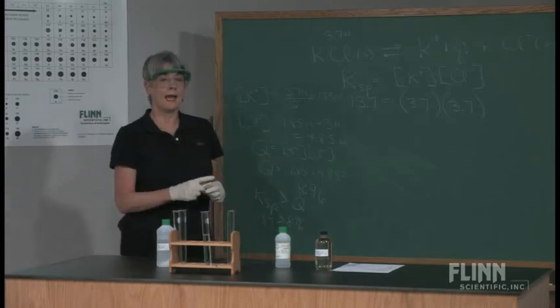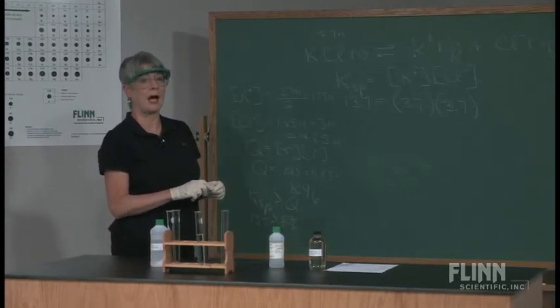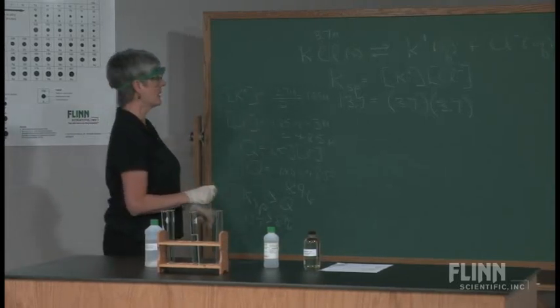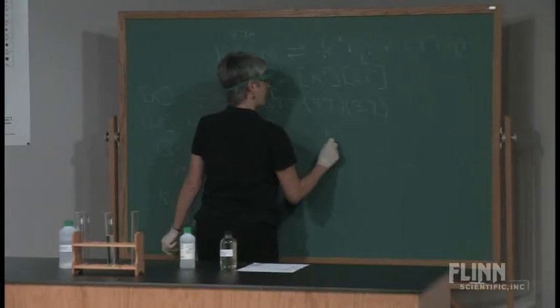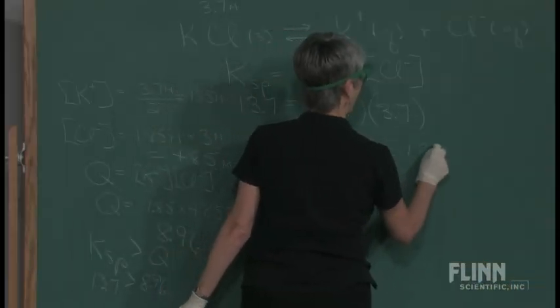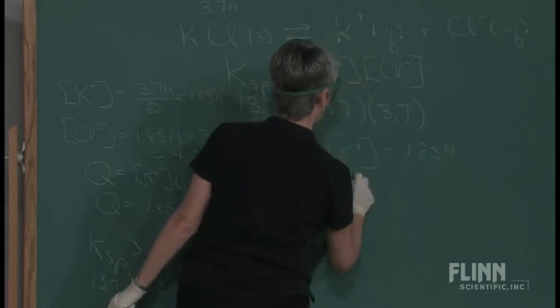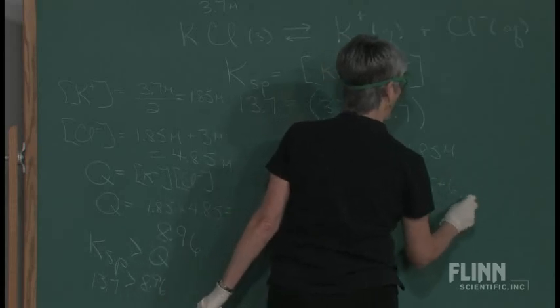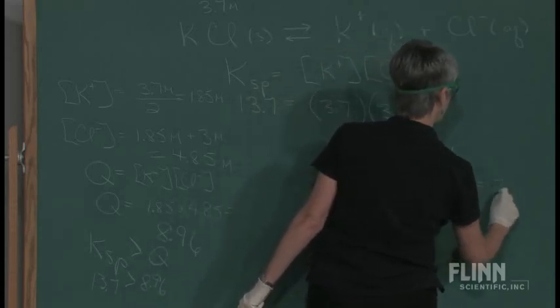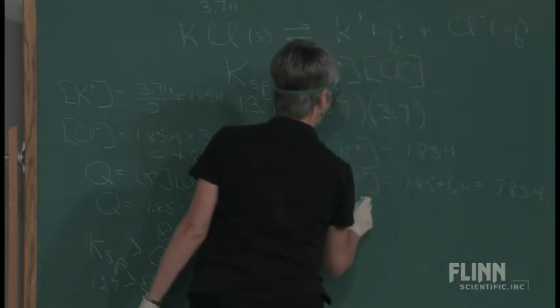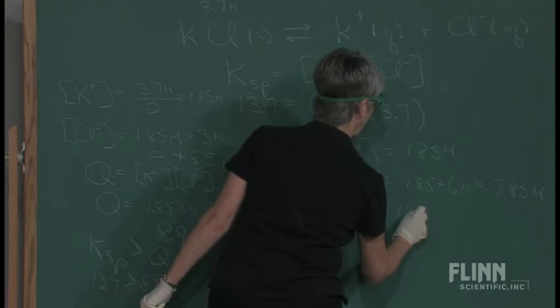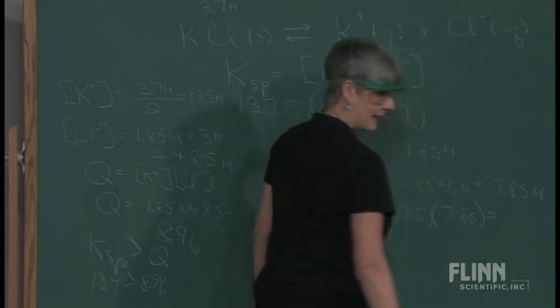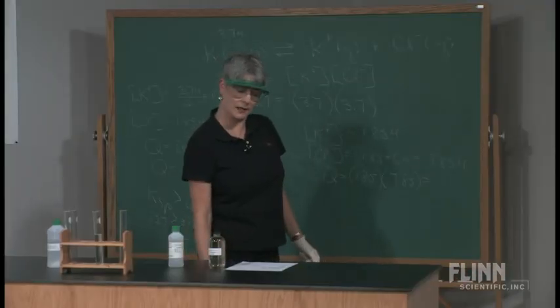Okay, what would happen if instead of using 6 molar I use 12 molar? Well, we go through these same calculations. If we use 12 molar, K is still going to be 1.85 molar, but this time the chloride concentration is going to be 1.85 molar plus half of 12, or 6 molar, which is going to give me 7.85 molar. And now when I do my Q, I've got 1.85 times 7.85, and I get 14.5.